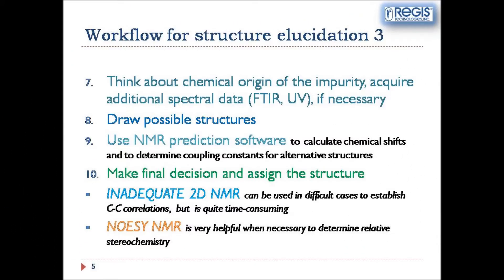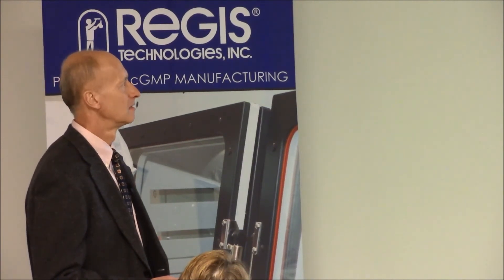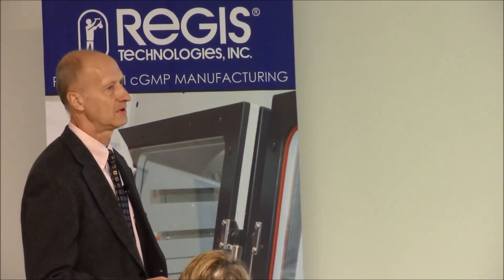It is not the end though — we need to think about the chemical origin of the impurity, and if necessary, acquire additional spectral data such as FTIR and UV, which are quite inexpensive. Knowing how the impurity was made and what process it came from is important, because logic is still the number one tool. We need to use all the information we have efficiently.